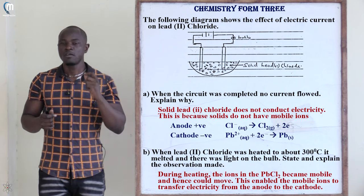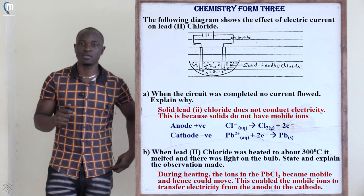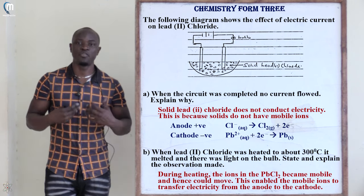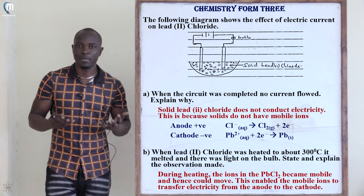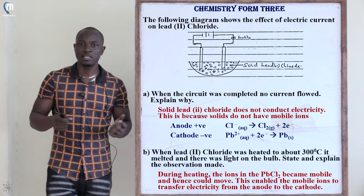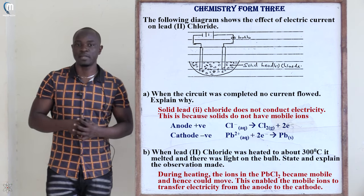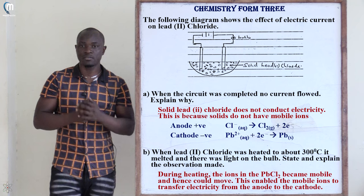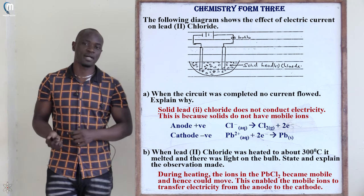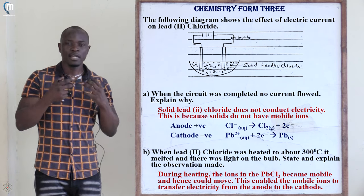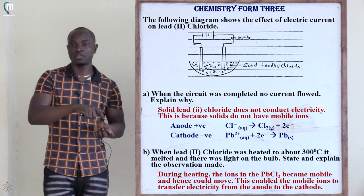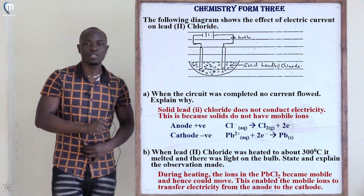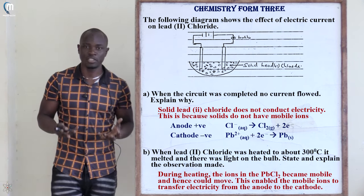The ions in solid lead(II) chloride are still intact — there are no mobile ions. Since there are no mobile ions, electricity could not pass from the anode to the cathode, so there is no observable change. Ionic compounds only conduct electricity in aqueous or liquid state, not in solid state.